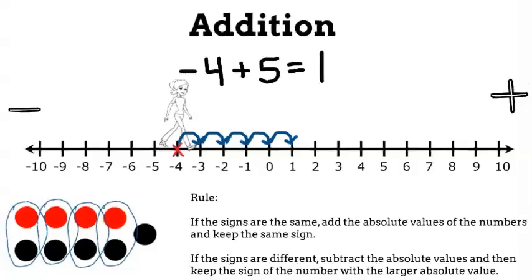In general, the rule is: if the signs are the same, add the absolute values of the numbers and keep the same sign. If the signs are different, subtract the absolute values and then keep the sign of the number with the larger absolute value.